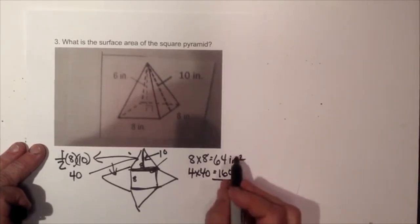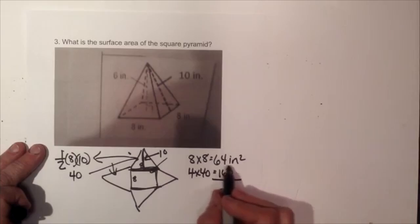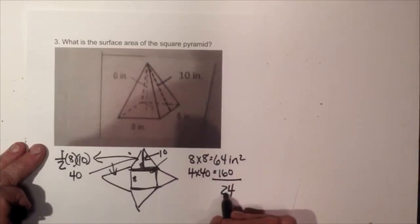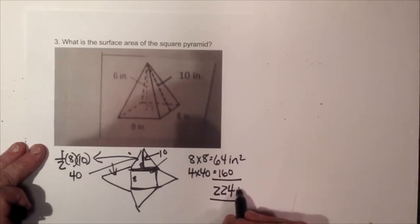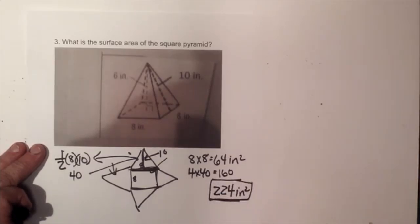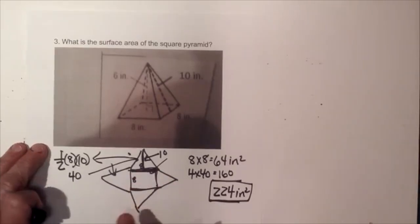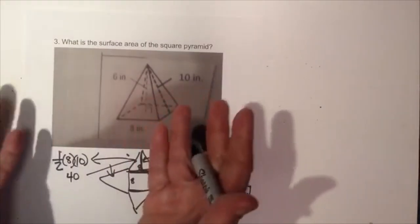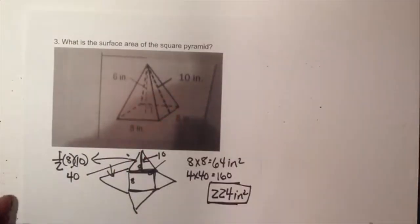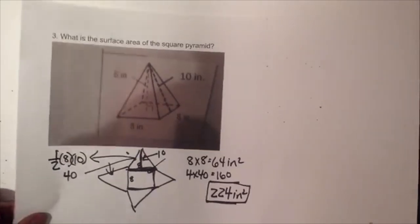Now I add the square to the four triangles: 160 plus 64 gives me 224 square inches for the total surface area of the square pyramid. Drawing the net — the flattened-out shape — is the easiest way to approach this problem.